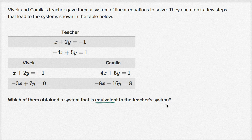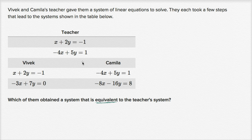The first question we should ask ourselves is: what does it mean to have an equivalent system? An equivalent system is a system that has the same solution. So if there's some x-y pair that satisfies the teacher's system, Vivek's system is equivalent if it has the same solution. Similarly, if Kamala's system has the same solution, we'll call it equivalent to the teacher's system.